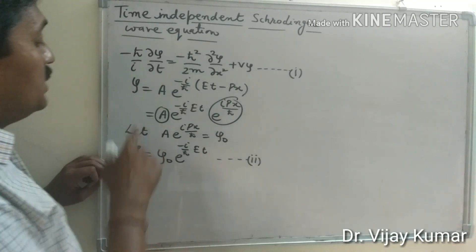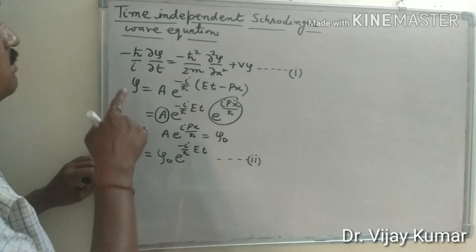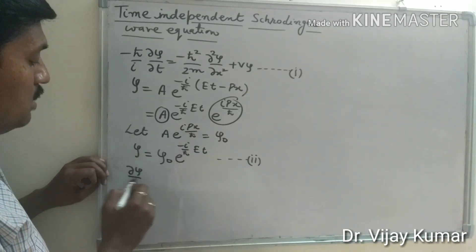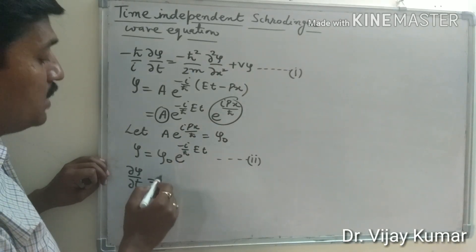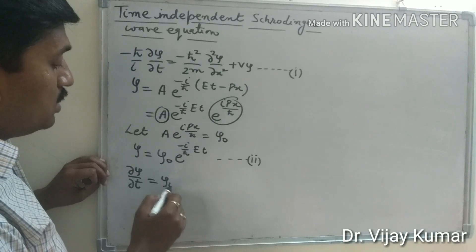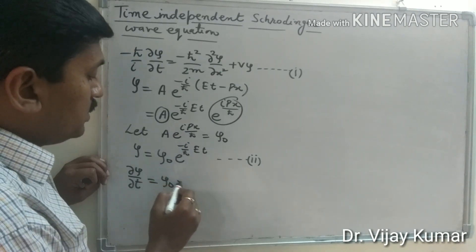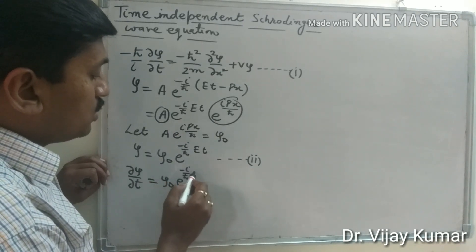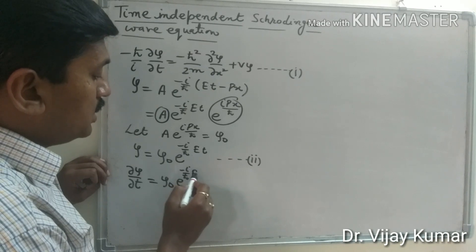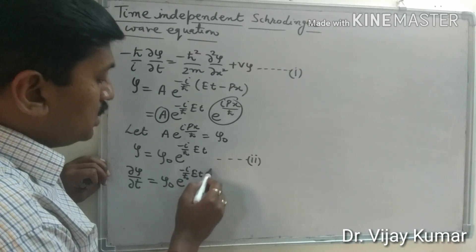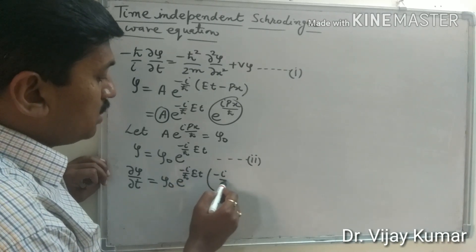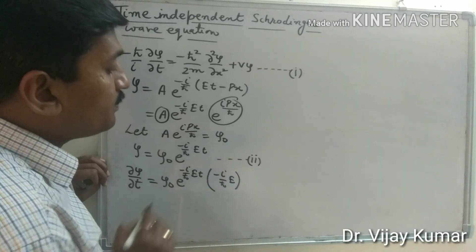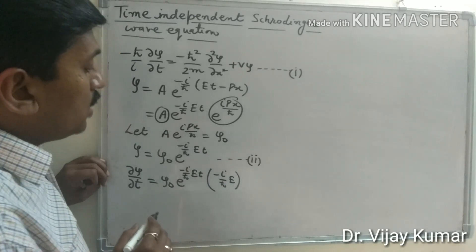Now differentiate psi with respect to t. Del psi upon del t equals psi-naught times the differentiation of e to the power minus i upon h-cross Et, which gives minus i upon h-cross into E.